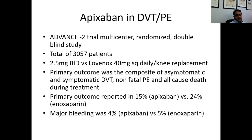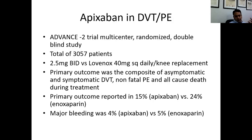Apixaban has also been used in DVT and PE. The ADVANCE-2 trial was a multicenter, randomized, double-blind study with 3,000 patients comparing apixaban 2.5 mg twice daily versus enoxaparin 40 mg subcutaneously daily. The primary outcome — composite of asymptomatic and symptomatic DVT, non-fatal PE, and all-cause death during treatment — was reported in 15% in the apixaban arm versus 24% in the enoxaparin arm. Major bleeding was 4% in the apixaban arm versus 5% in the enoxaparin arm.